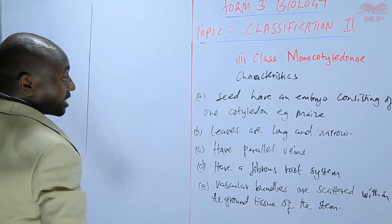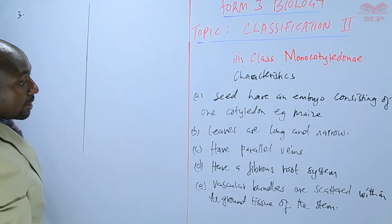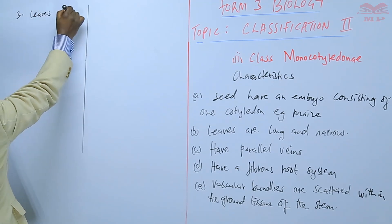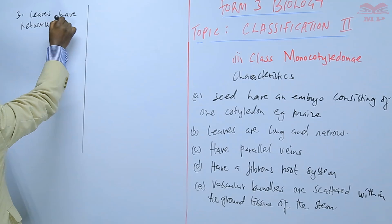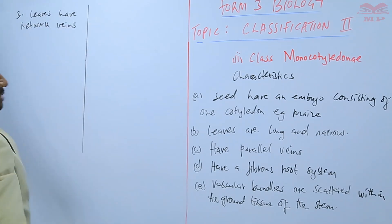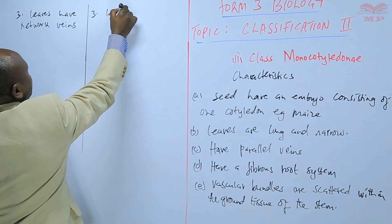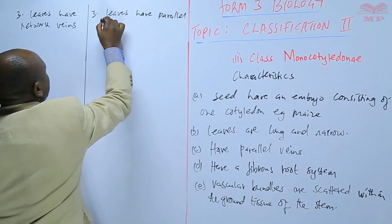Number three. The Dicotyledonae, in terms of the leaves, have network veins. In the case of Monocotyledonae, the leaves have parallel veins.